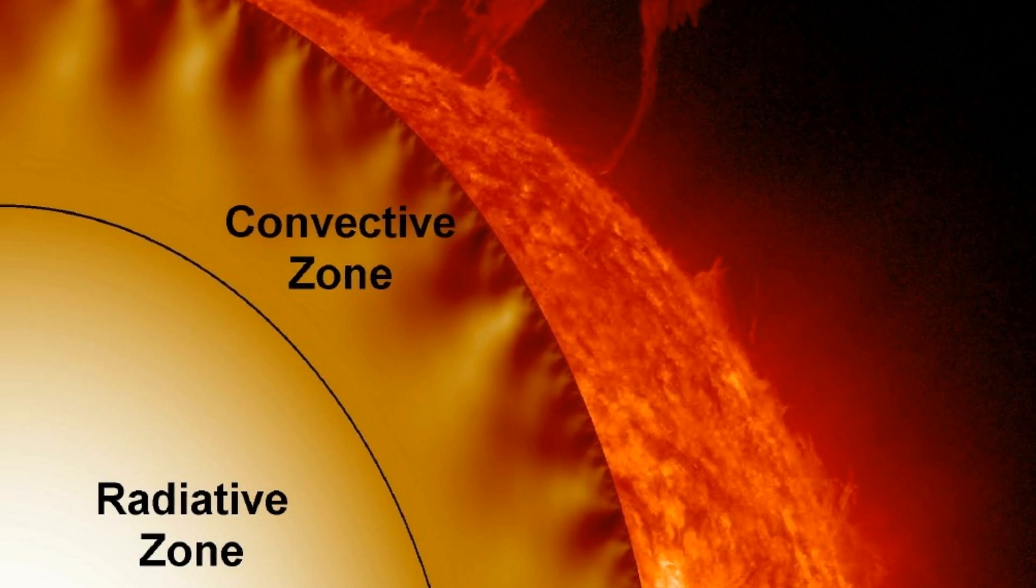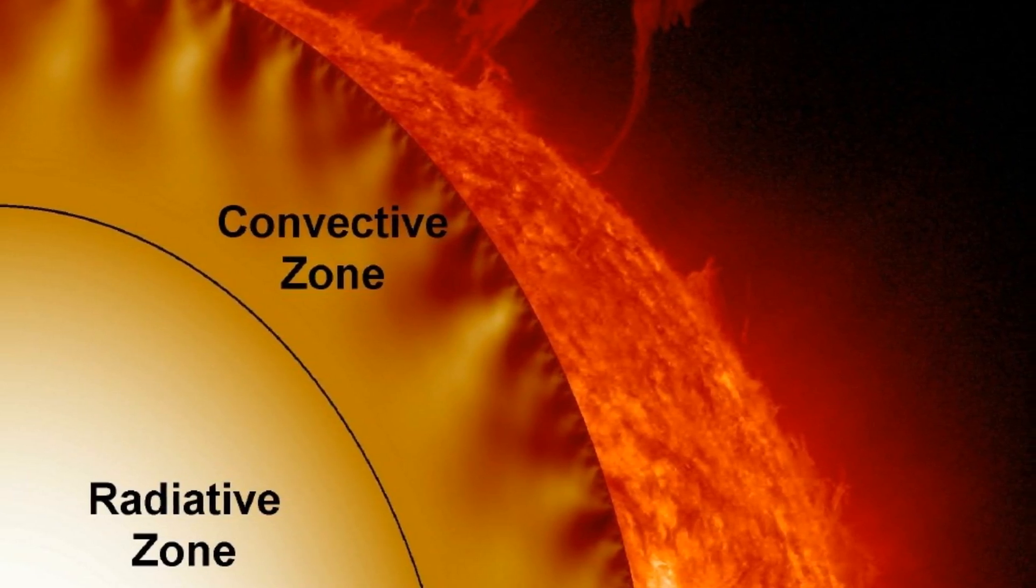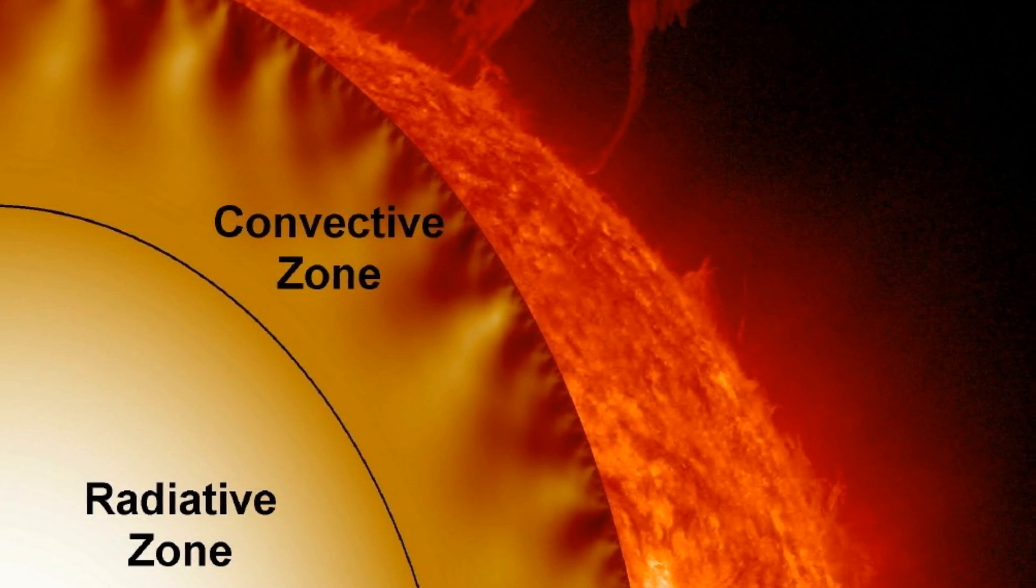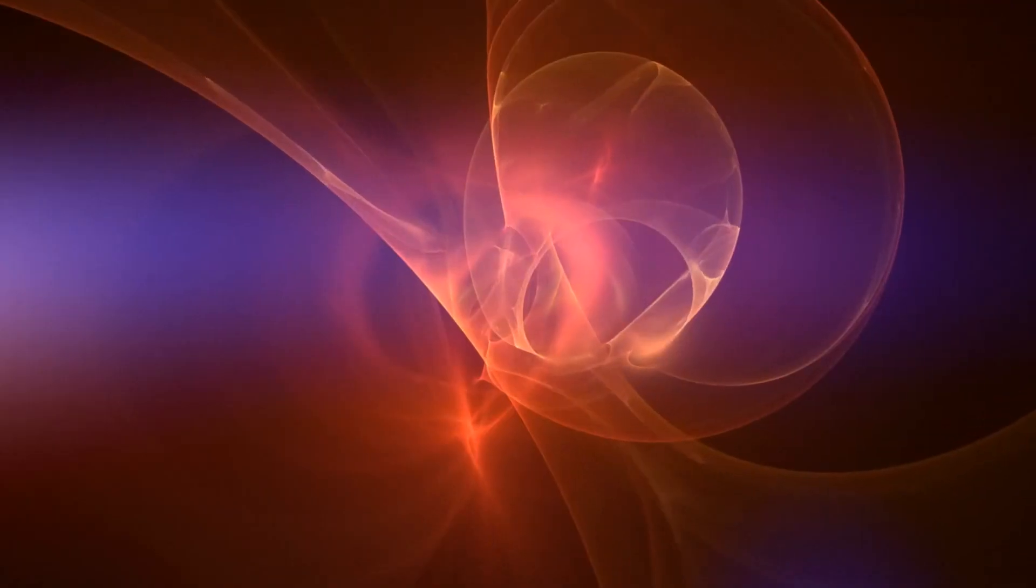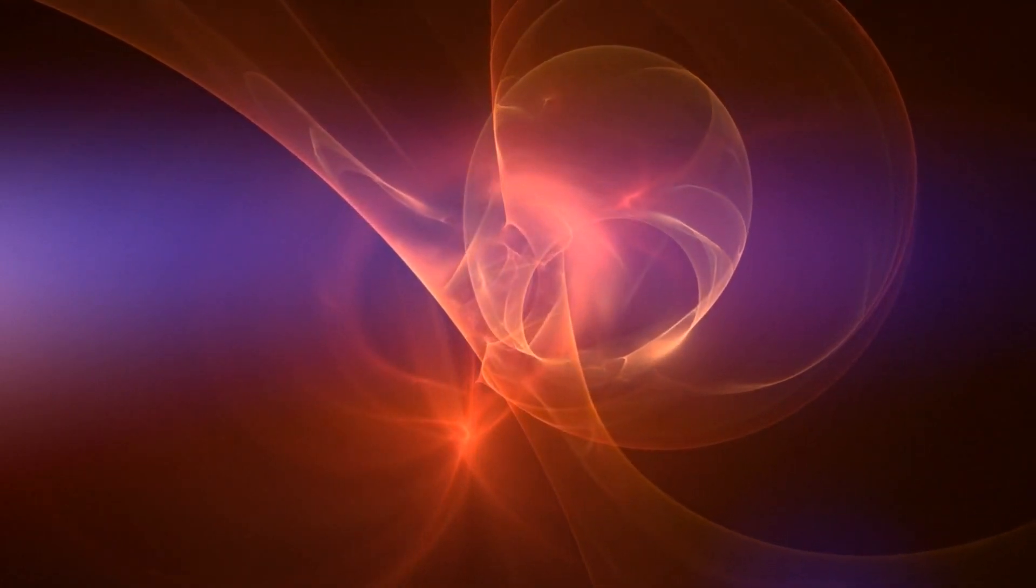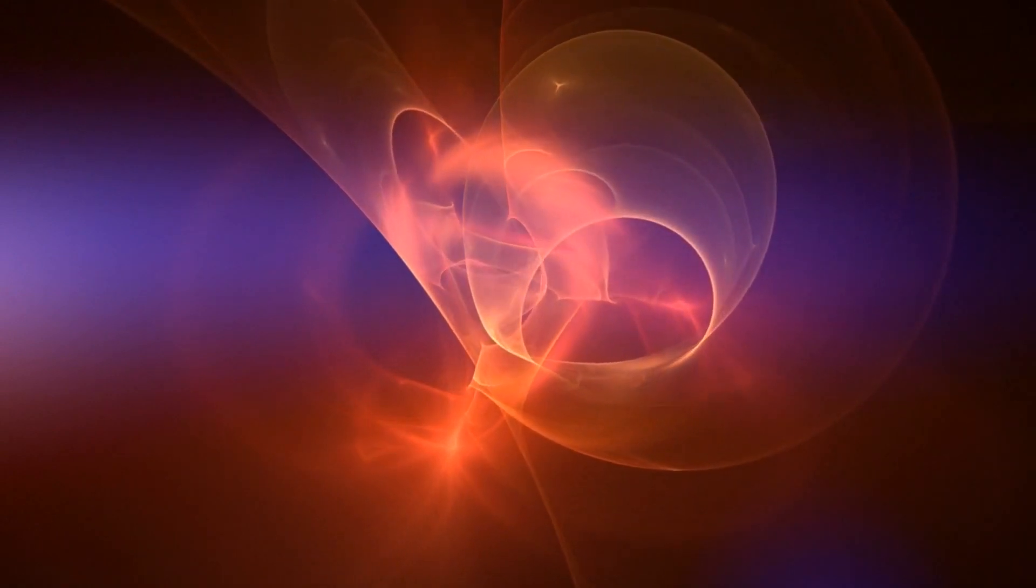Moving outwards, we reach the radiative zone. Here, energy from the core bounces around for up to a million years before it reaches the next layer, the convective zone. This is where hot plasma rises, cools, and then sinks back down in a process called convection, similar to boiling water.